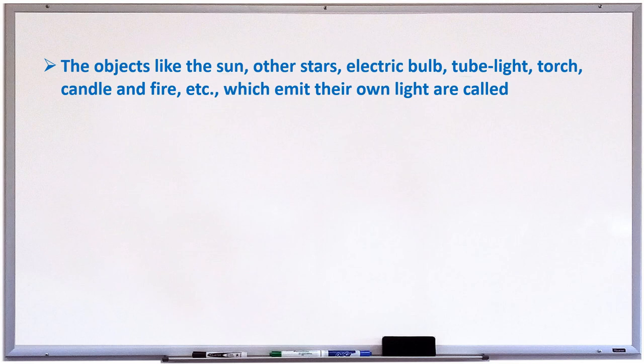The objects like the sun, other stars, electric bulb, tube light, torch, candle, fire, etc., which emit their own light, are called luminous objects.